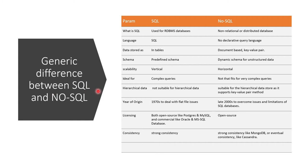SQL is used for RDBMS — relational database management systems — where data is stored in the form of tables with relations between multiple tables. NoSQL is known as a non-relational or distributed database, meaning there is no concept of rows and columns. Instead of a table, the equivalent in NoSQL is called a collection.